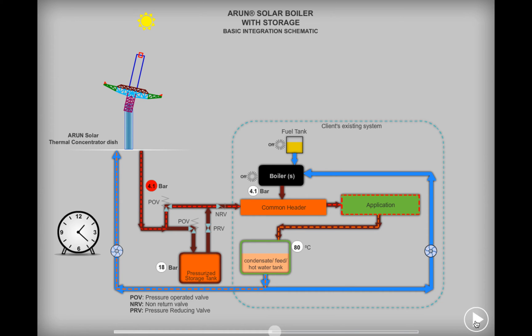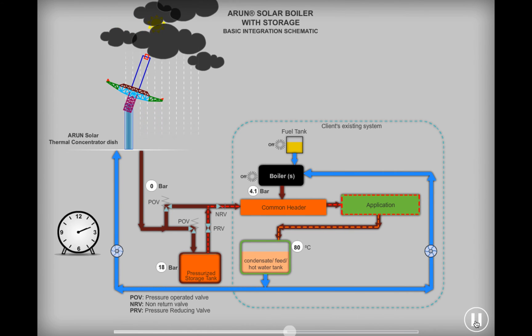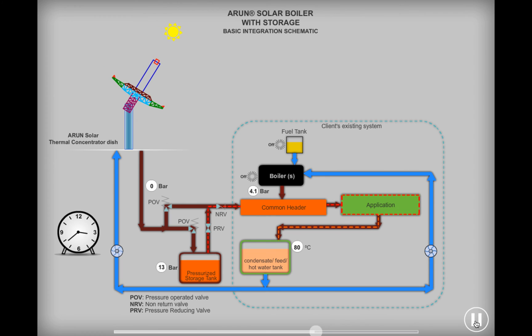When the sun is not available, steam will first be generated from the storage tank, thereby saving the fuel that would have otherwise been consumed by the existing boiler. As a result, the pressure in the storage tank will reduce. Once this pressure is below the pressure required by the application, the existing heating system will turn on automatically for further delivery of steam.